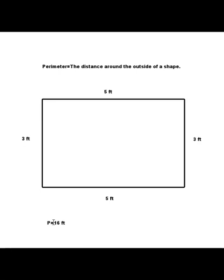Notice I didn't say square feet. When measuring perimeter, we don't say square feet or square inches — that's only for area. Area is how many squares could fit on the surface of the shape, while perimeter is just the distance around the outside.